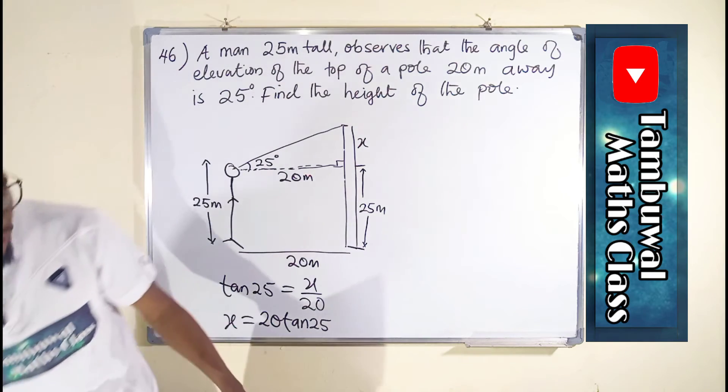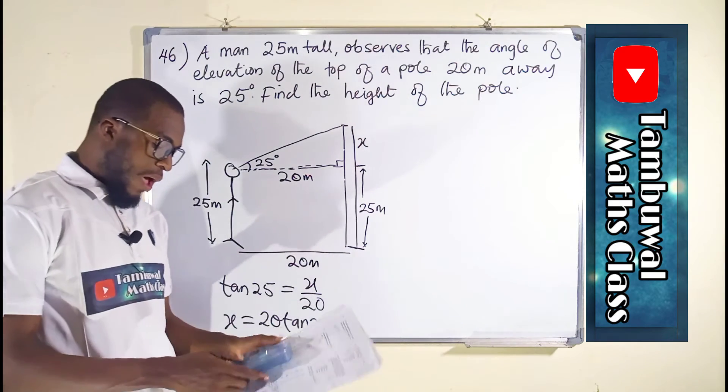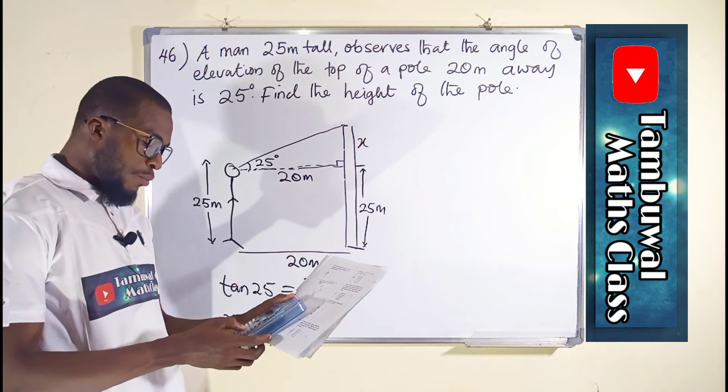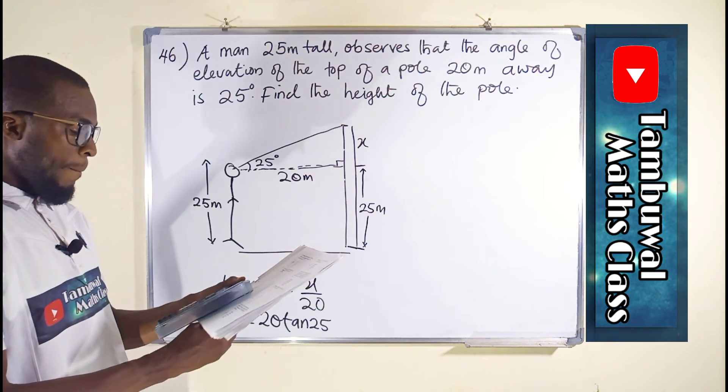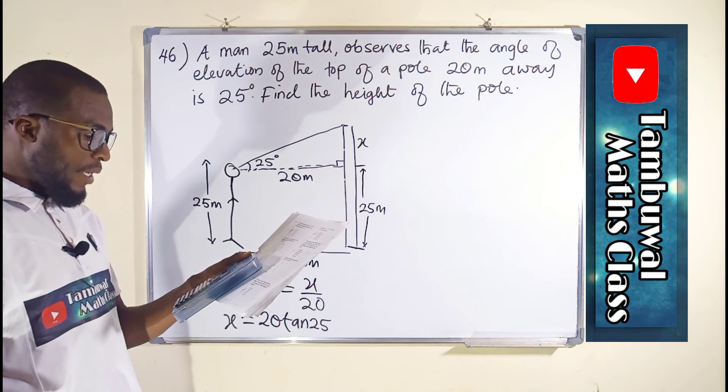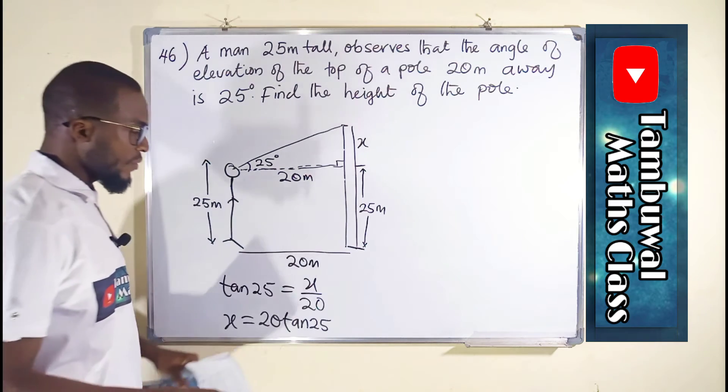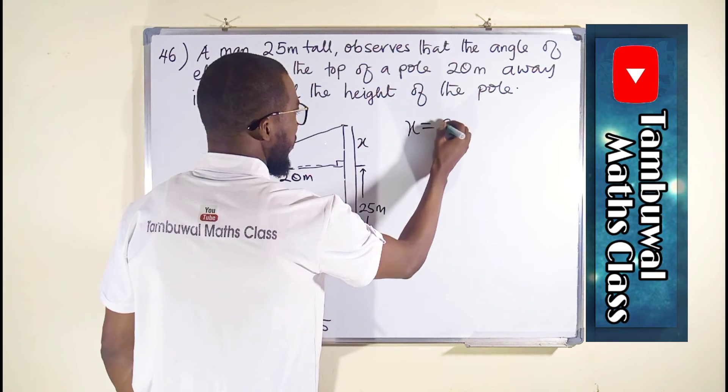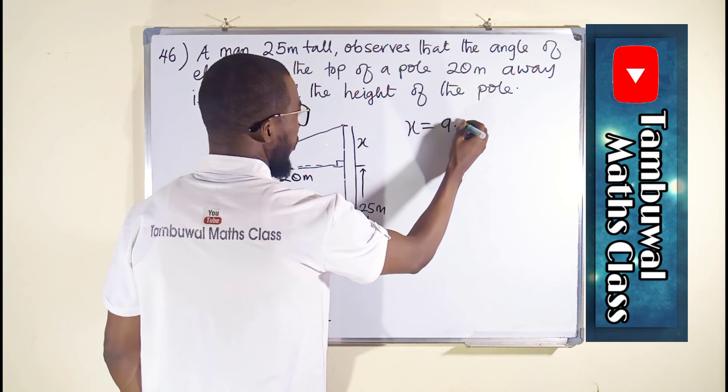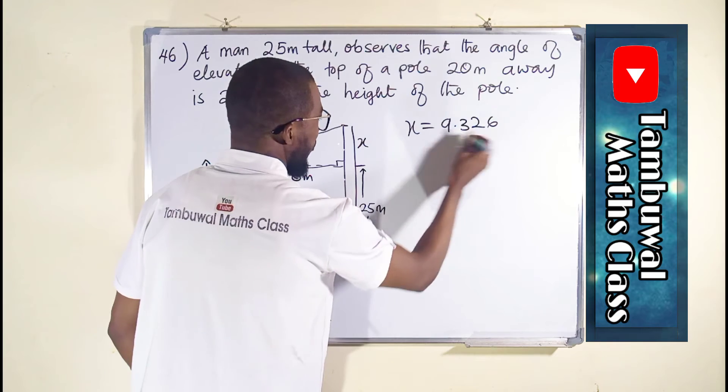So using calculator, we have 20 multiplied by tan of 25. We obtain 9.326. X equals 9.326, approximately.